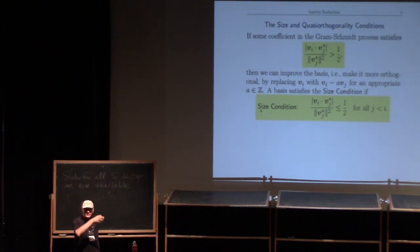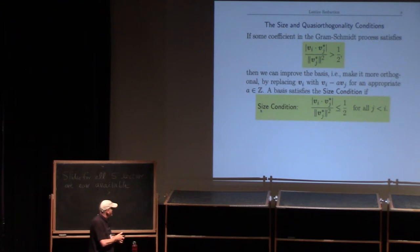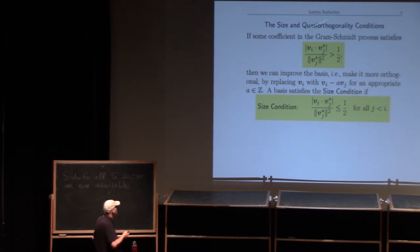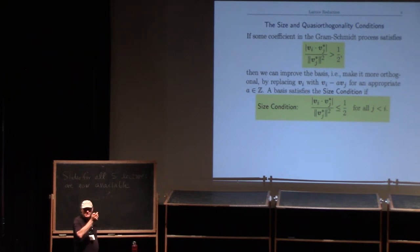The vj* vectors are the vectors that come out of Gram-Schmidt. Keep in mind they are orthogonal to one another but they're not in a lattice. At the point at which Gram-Schmidt doesn't help anymore, this size condition will be true — all these quantities will be less than a half, so rounding to zero doesn't help. So now we're stuck, but not entirely.